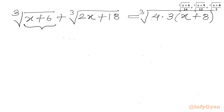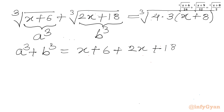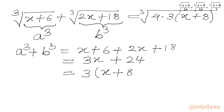I will use substitutions. Let the radicand (x+6) equal a cube, and let the radicand (2x+18) equal b cube. Then we can check the value of a cube plus b cube: x+6 plus 2x+18 gives 3x plus 24. We can take 3 common, so in the bracket we have x+8.